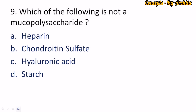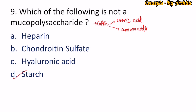Question 9: Which of the following is not a mucopolysaccharide? Mucopolysaccharides, also known as glycosaminoglycans (GAGs), contain uronic acid and amino sugars. Examples include heparin (an anticoagulant), chondroitin sulfate, hyaluronic acid, dermatan sulfate, and keratan sulfate. The incorrect one — which is not a mucopolysaccharide — is starch. So the correct option is option D, starch.